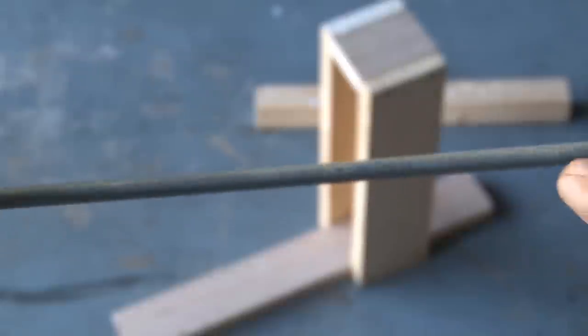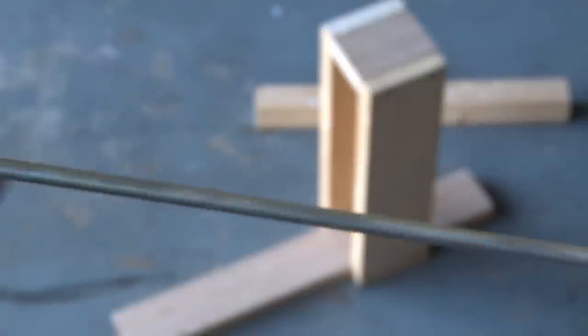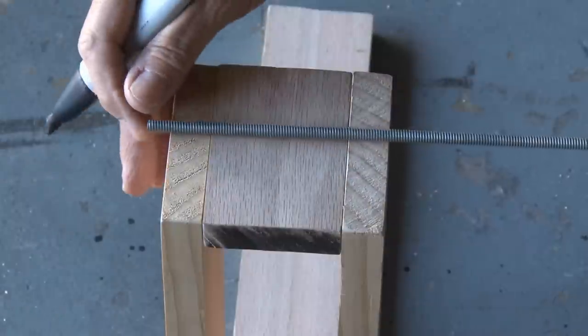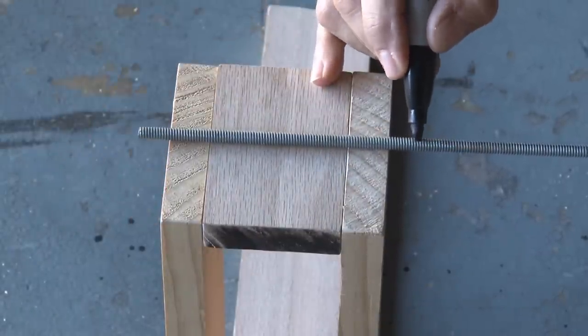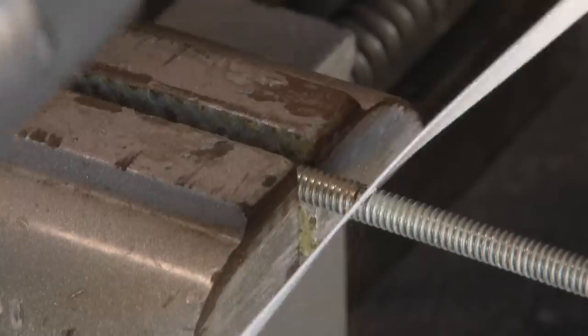A threaded steel rod is what we'll use to allow the hammer to pivot inside the housing. So lay that on top of the housing and measure about a half inch on each side, and then make a mark. Then taking a hacksaw, we're going to cut that steel rod down to size.